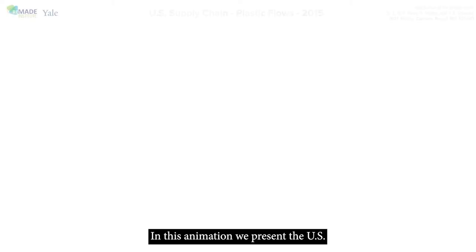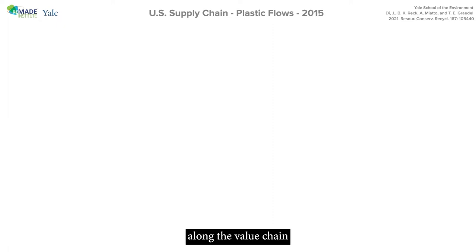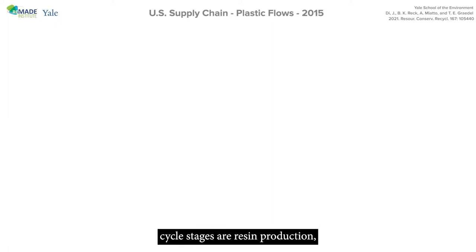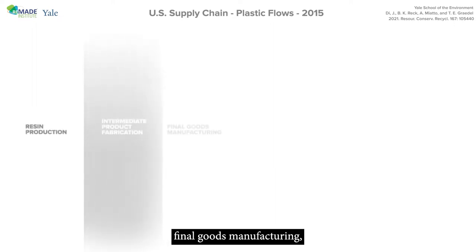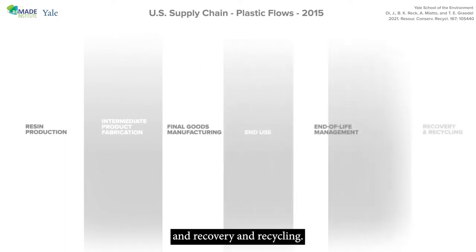In this animation, we present the US Plastics Cycle in 2015 to illustrate how plastics move along the value chain from production to end of life. The main life cycle stages are resin production, intermediate product fabrication, final goods manufacturing, end-use, end-of-life management, and recovery and recycling.